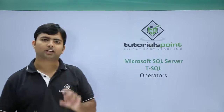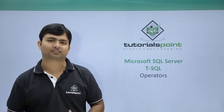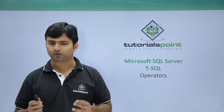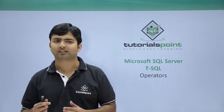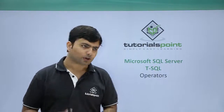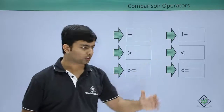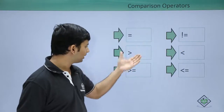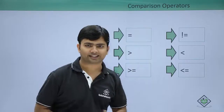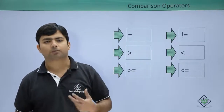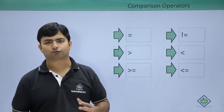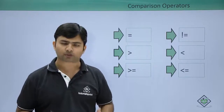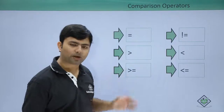We have already used some operators like equals to with the WHERE clause in order to pass the condition. Now in this video we will see some different operators which we can use in the WHERE clause in order to make customized conditions for getting the data. So let us start with the comparison operators — there are 6: equals to, not equals to, greater than, less than, greater than equals to, and less than equals to. All these operators compare a couple of values and will return a boolean true or false. If the records have a true condition, they will appear in the output.